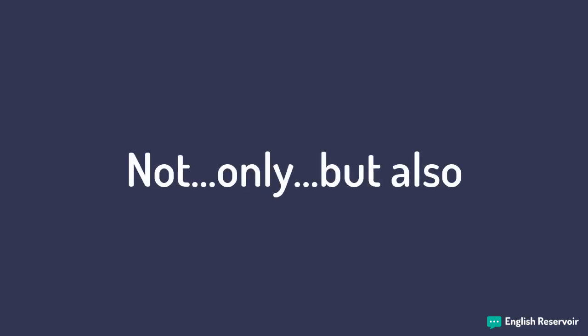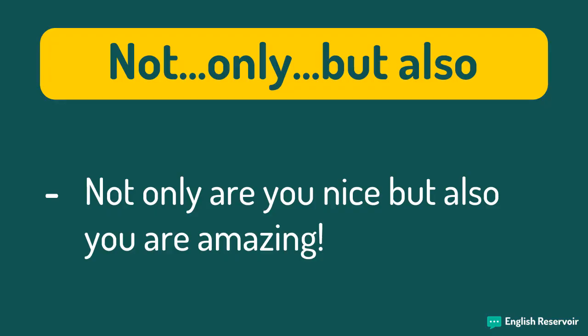Not only, but also. We use this combination to give more information about something. Here comes the somewhat tricky part: we need to invert the subject with the verb, as if it were an interrogative, but only if we begin the phrase with 'not only.' Not only are you nice, but also you are amazing. Here we have to invert 'are' with 'you' because we began the phrase with 'not only.'